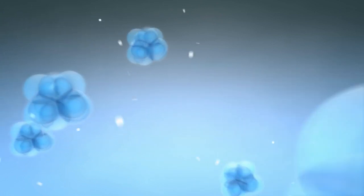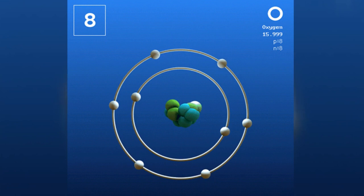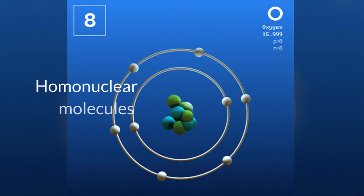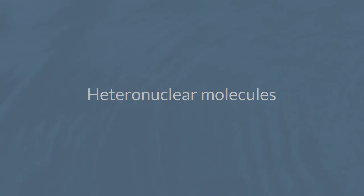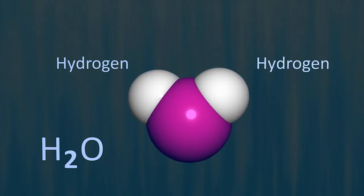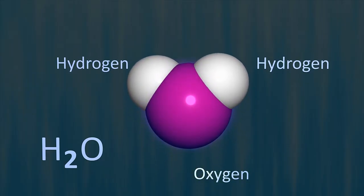A molecule can be composed of a single chemical element, as with oxygen. These types of molecules are called homonuclear molecules, but it can also be heteronuclear, composed of many elements, like water. Water has two hydrogen atoms and one oxygen atom.